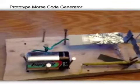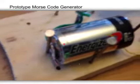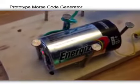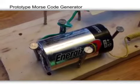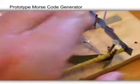So here's the prototype Morse code generator. Here's the battery. You can see I've connected this green wire to the battery here, and then I've attached this green wire to the switch. And here's the switch.